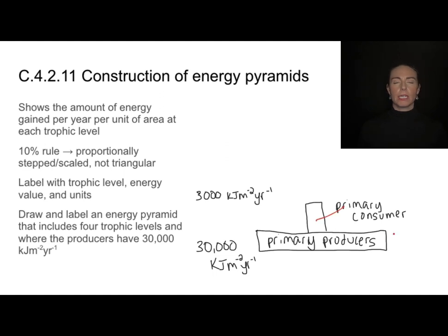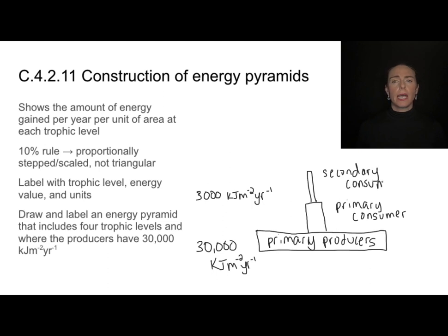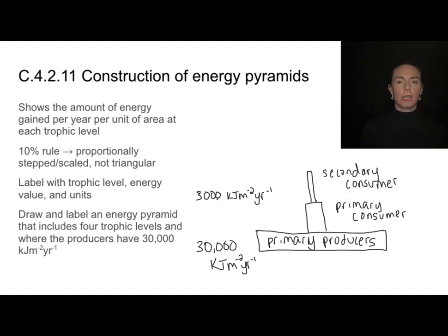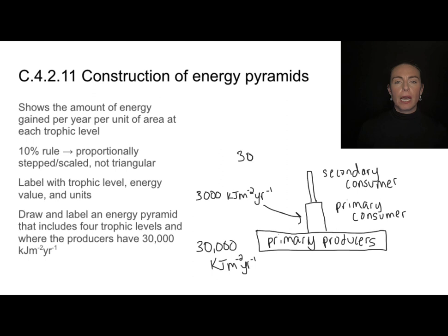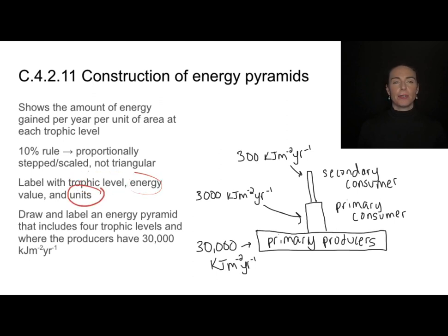I'll label the primary consumers next to that level and draw one more step for the secondary consumers. These secondary consumers could get eaten and you may need to draw another layer. The 3,000 that belongs to the primary consumers goes down again by 90%, so now we're left with 300 kilojoules per meter squared per year. This energy pyramid is labeled with trophic levels, energy values, and units, and it is stepped and scaled according to the 10% rule.